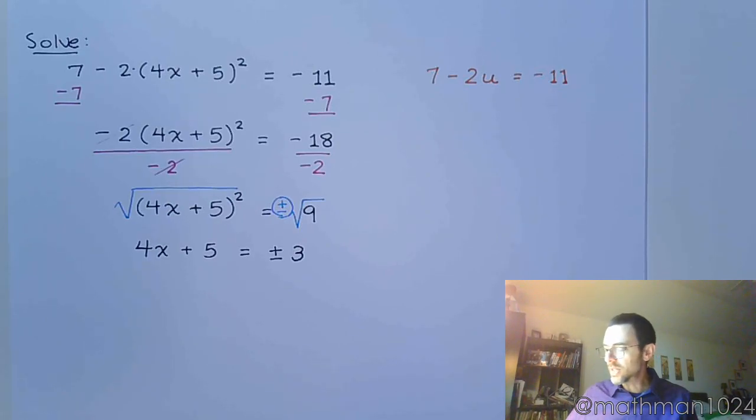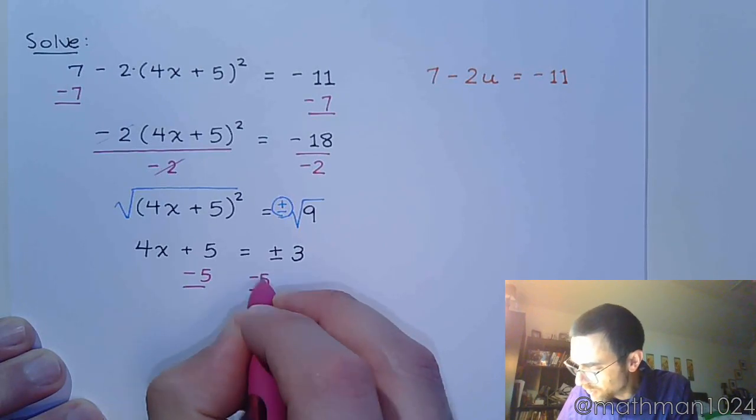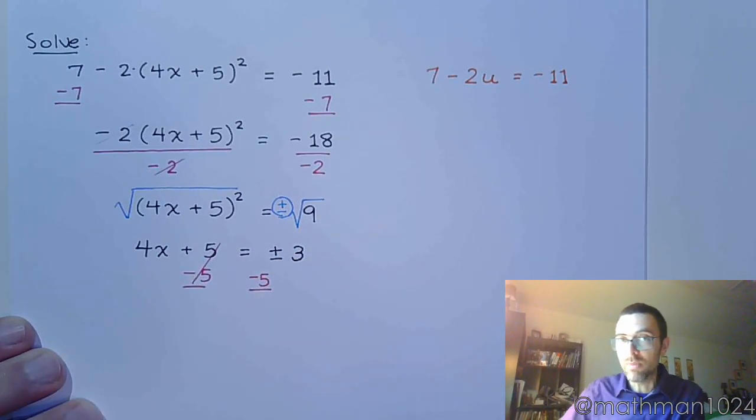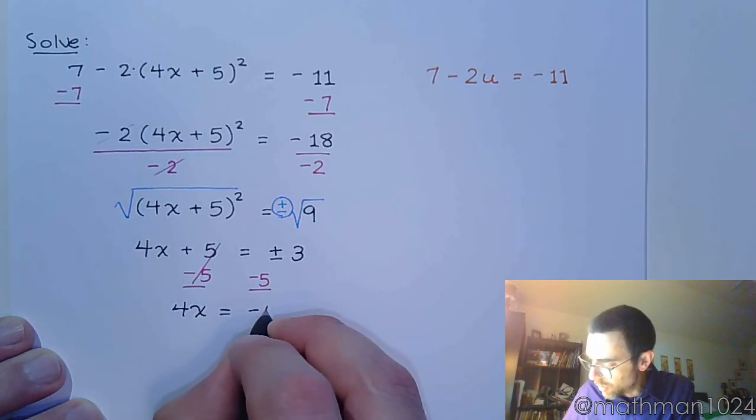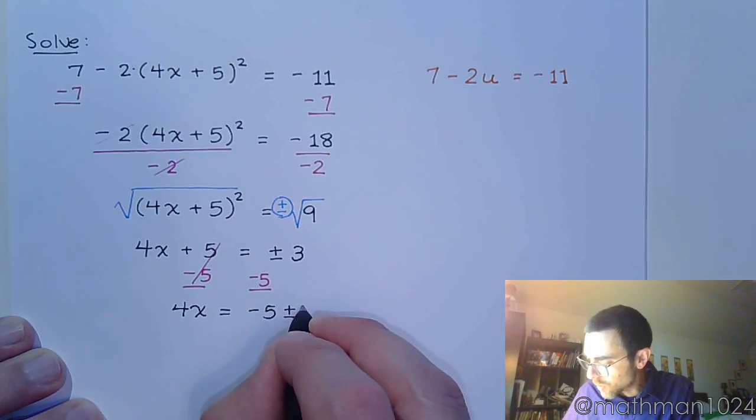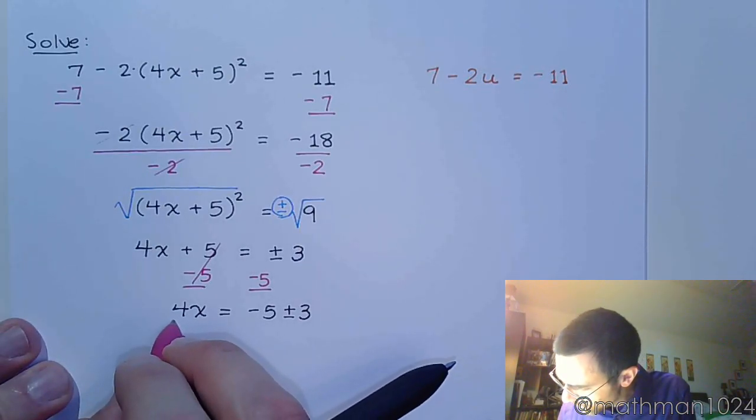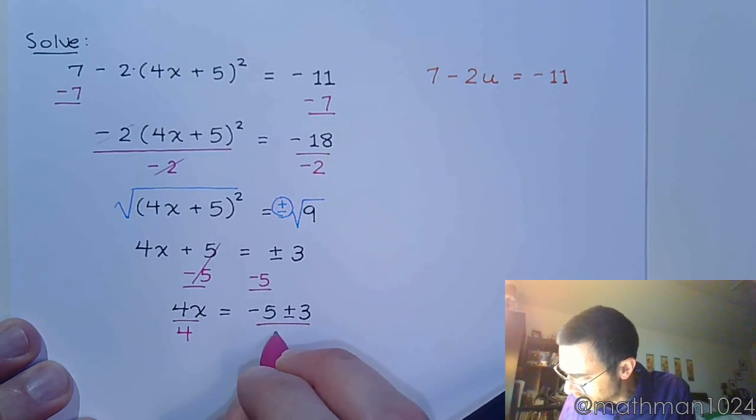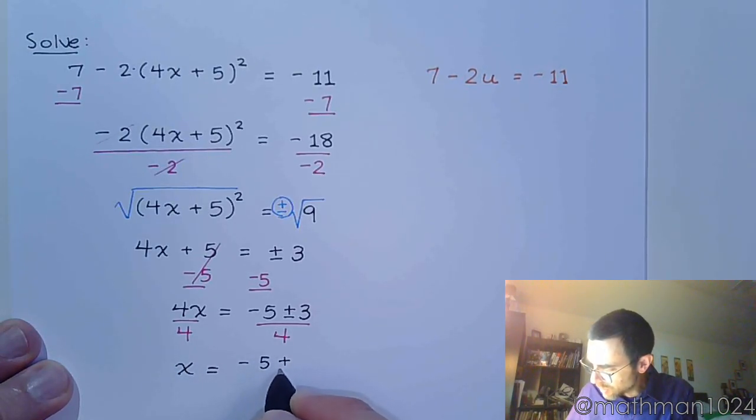All right, so let's finish this. Let's get x by itself by first subtracting 5 on both sides. And as I mentioned before, when you already have a plus or minus going on the right side, anything you move over should really go in front of that to avoid confusion. So -5 ± 3 - by writing it this way, it's very clear that the plus or minus is connected to the 3 and has no effect on the -5 whatsoever. Finally, we divide both sides by 4, so x = (-5 ± 3)/4.